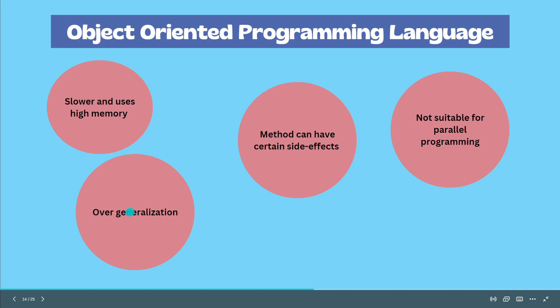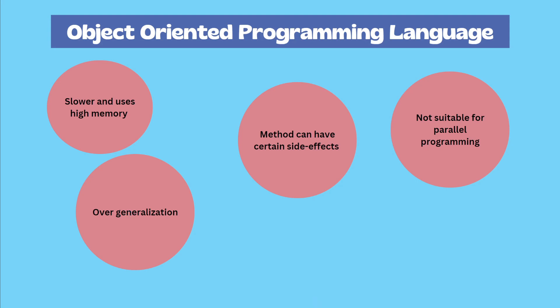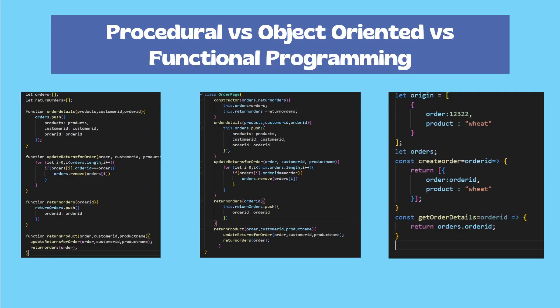The disadvantages of object-oriented programming language are: compared to other programming languages, it is slower and uses higher memory. As it has the state concept, methods can have certain side effects, making it not suitable for parallel programming implementation. Also, object-oriented programming language can be considered overgeneralized. So we've seen theoretically the features, advantages, and disadvantages of procedural, object-oriented, and functional programming languages.